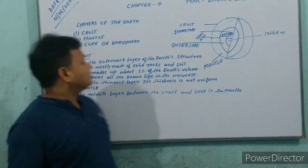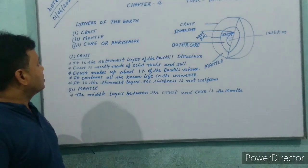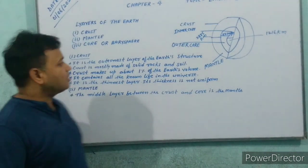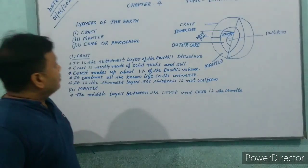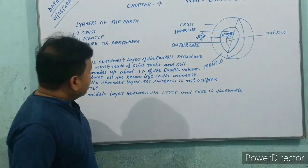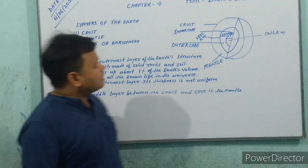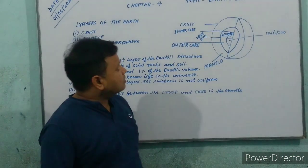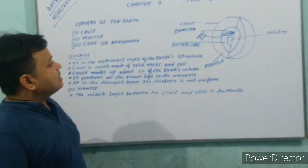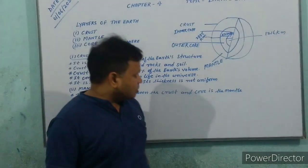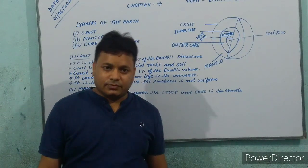We know the layers of the Earth. There are three layers of the Earth. One is the crust, mantle, and core. I will discuss about the crust, inner core, outer core and mantle.